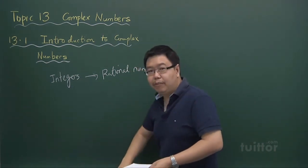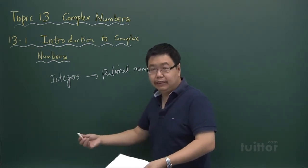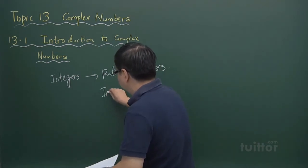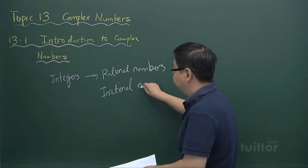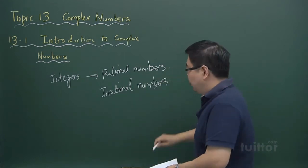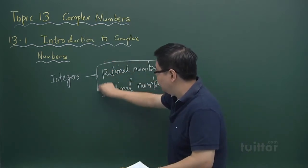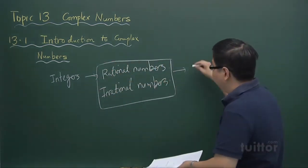Then we talk about irrational numbers, numbers like square root 2, square root 3, pi, e. All these are irrational numbers. And together, the rational numbers and irrational numbers form this group of numbers which we call the real numbers.